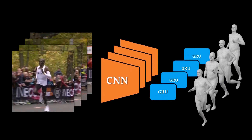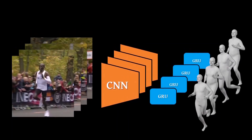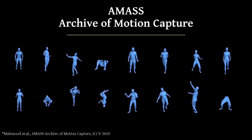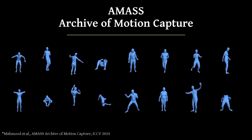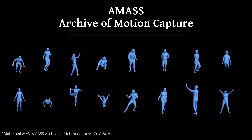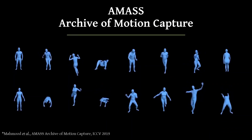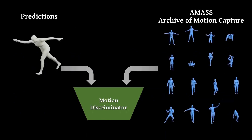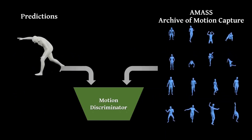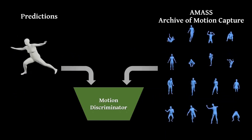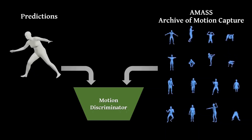We refer to this part of the model as the pose generator. We train a motion discriminator using a large-scale 3D motion capture dataset called AMASS. If the motion generator is able to fool the discriminator, then the predicted motion is realistic.